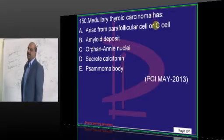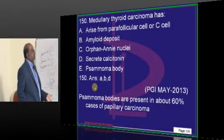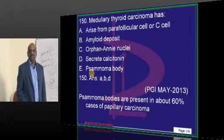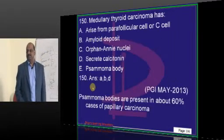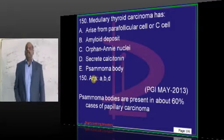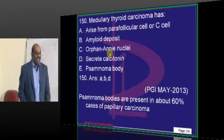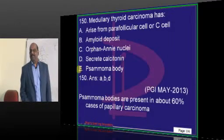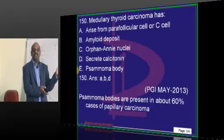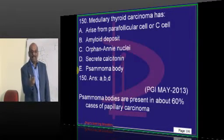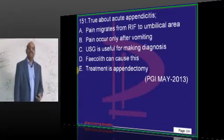Thyroid carcinoma is a favorite topic of the examiner. Medullary carcinoma arises from the parafollicular cells, amyloid deposit will be there, and it secretes calcitonin. But orphan Annie eye cells and psammoma bodies are features of papillary carcinoma. If a histology slide is given and the question is on thyroid, only two possible histological findings could be: psammoma body or orphan Annie cells.